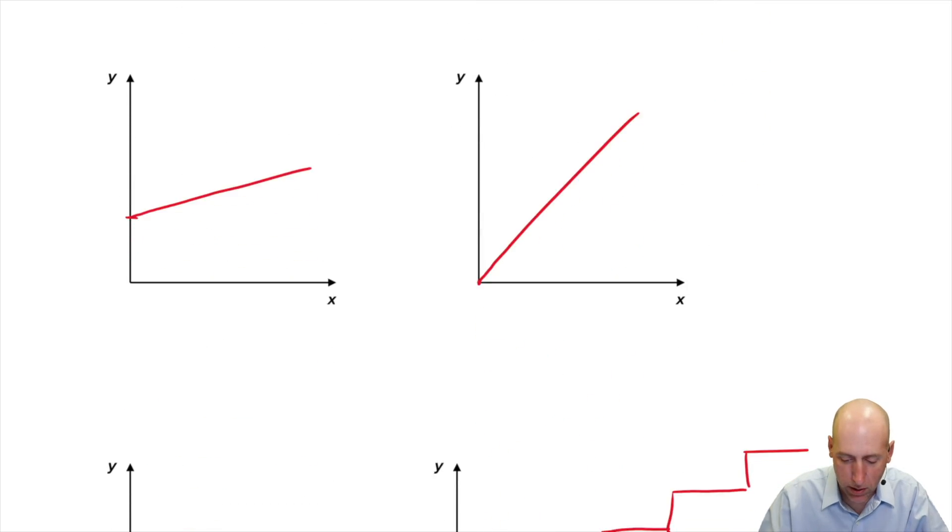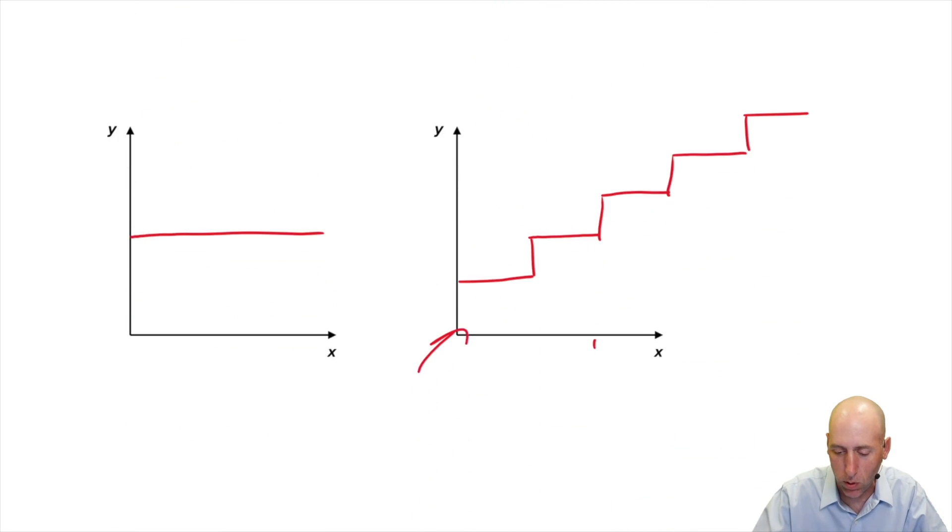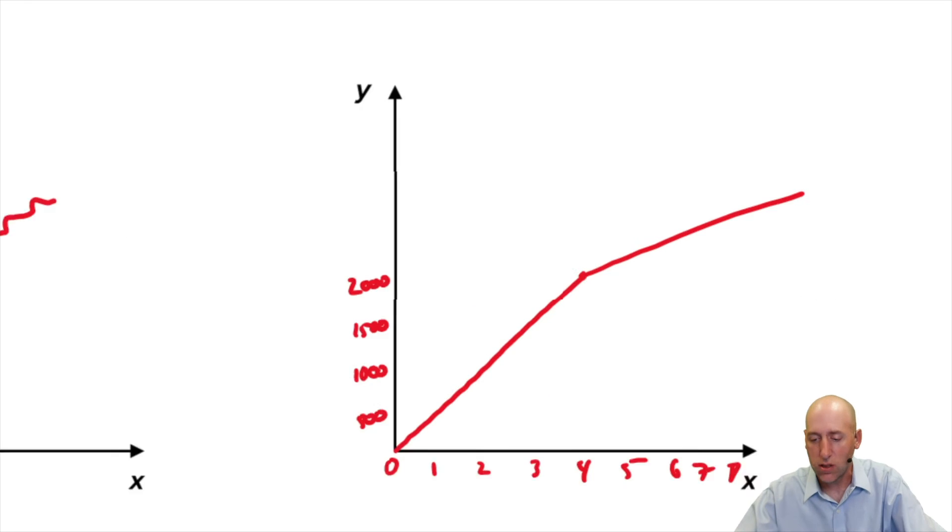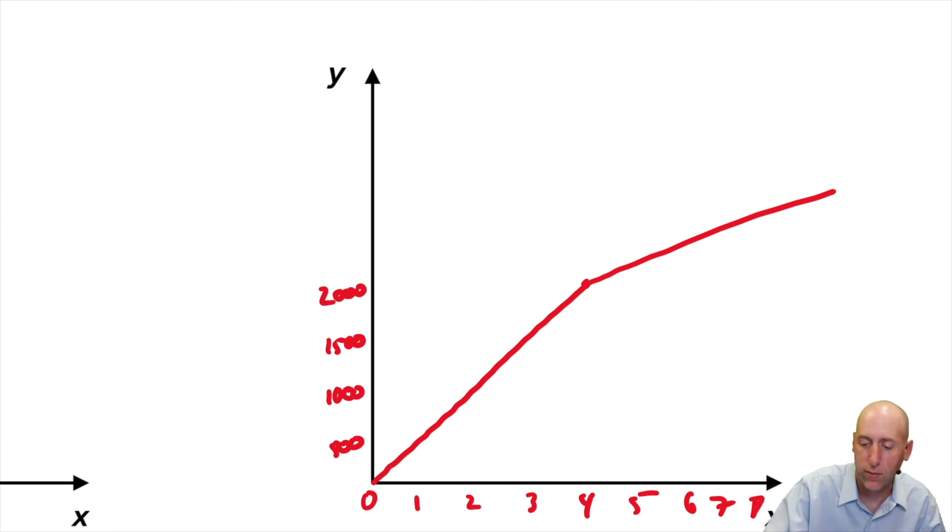But when we get over a certain length of flight, it reduces to $300 an hour. So between hour four and hour five, we don't go from $2,000 to $2,500. We go from $2,000 to $2,300. And what ends up happening is the slope of our line right there starts to decrease. And it's still going up. We still pay more for hour five than we did for hour four. We pay $2,300 there, but that's closer as far as we're concerned.